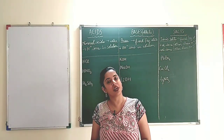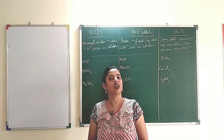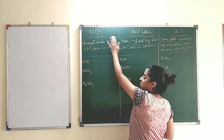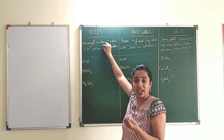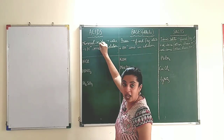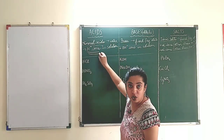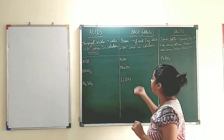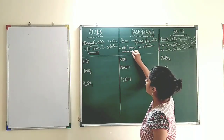Acids, bases and salts all dissociate into ions when they are in fused or aqueous state. In acids, the mineral acids — like H2SO4, HNO3, not organic acids — when dissolved in water furnish H+ ions in the solution. Similarly, bases that is alkalis, when they are in fused or aqueous state, they furnish OH- ions.